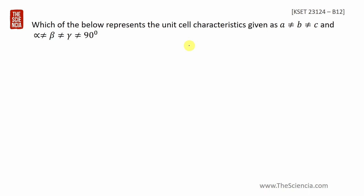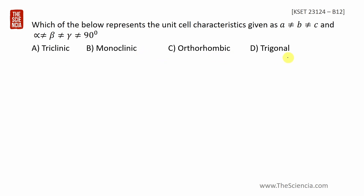The options are triclinic, monoclinic, or orthorhombic. The unit cell is symmetric when a = b = c and α = β = γ = 90°. That is why it is a symmetric unit cell. The name for the given conditions is triclinic.